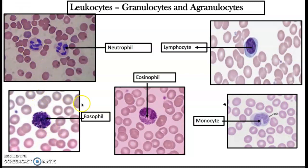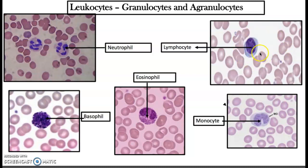Those three — neutrophils, eosinophils, and basophils — are called granulocytes because they have granules. Among the agranulocyte cells, we have lymphocytes and monocytes. The most abundant cells after neutrophils are the lymphocytes, making up 40–45% of white blood cells. They are the smallest leukocytes in our blood — actually about the same size as red blood cells. The large round nucleus occupies most of the cell.